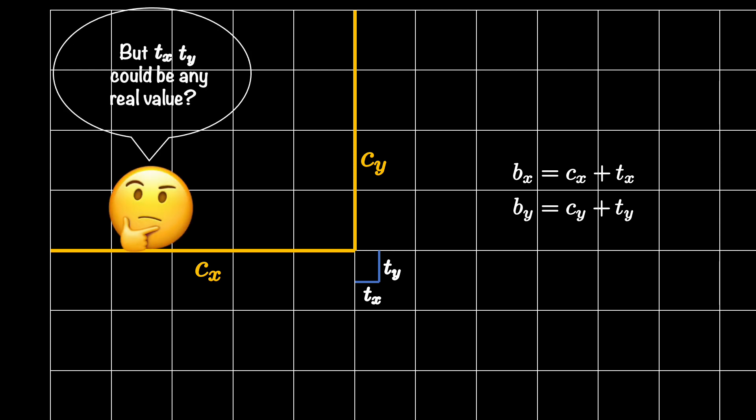But there is an issue here. You see the network is still going to predict the real number for TX and TY and it could be anything. It's not going to be between 0 and 1, and you want that because you are predicting something within the grid cell and you know that the size of the grid cell is one by one. So TX and TY must be between 0 and 1.